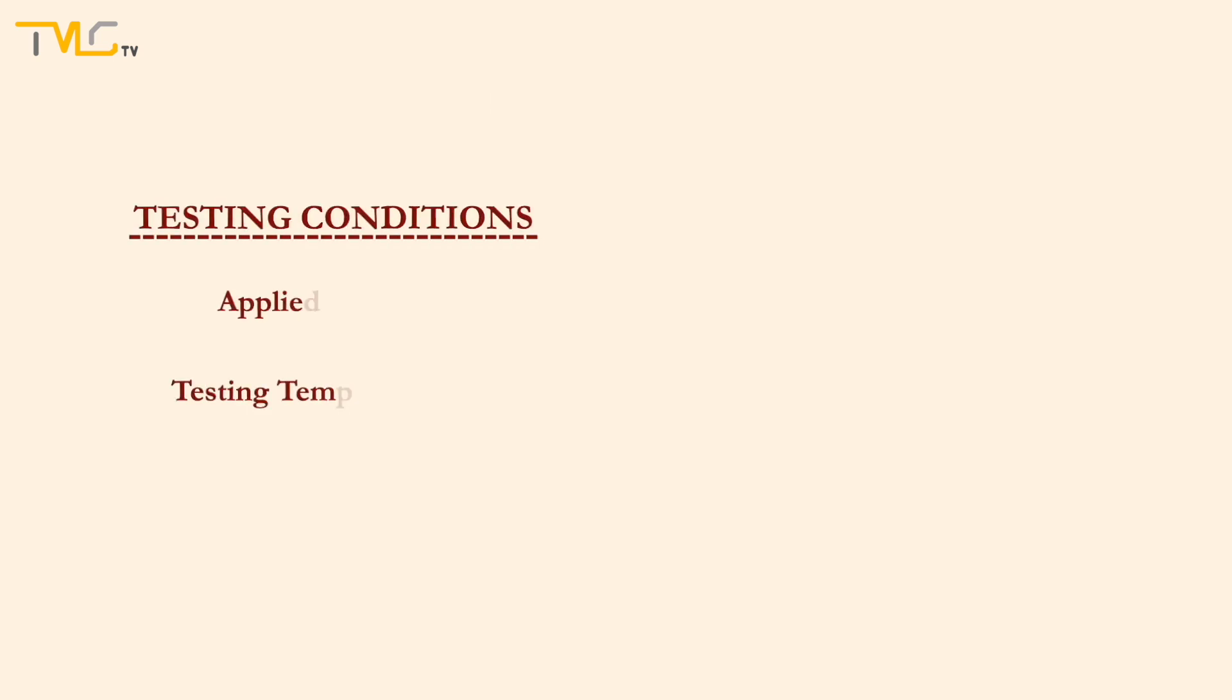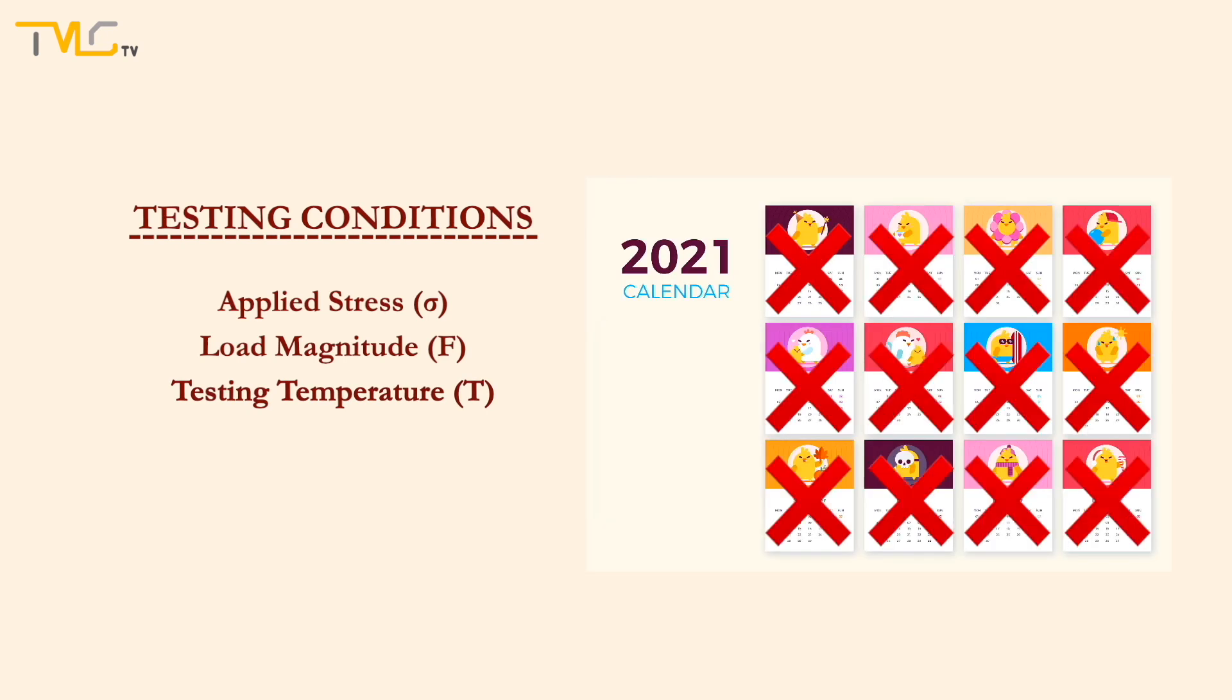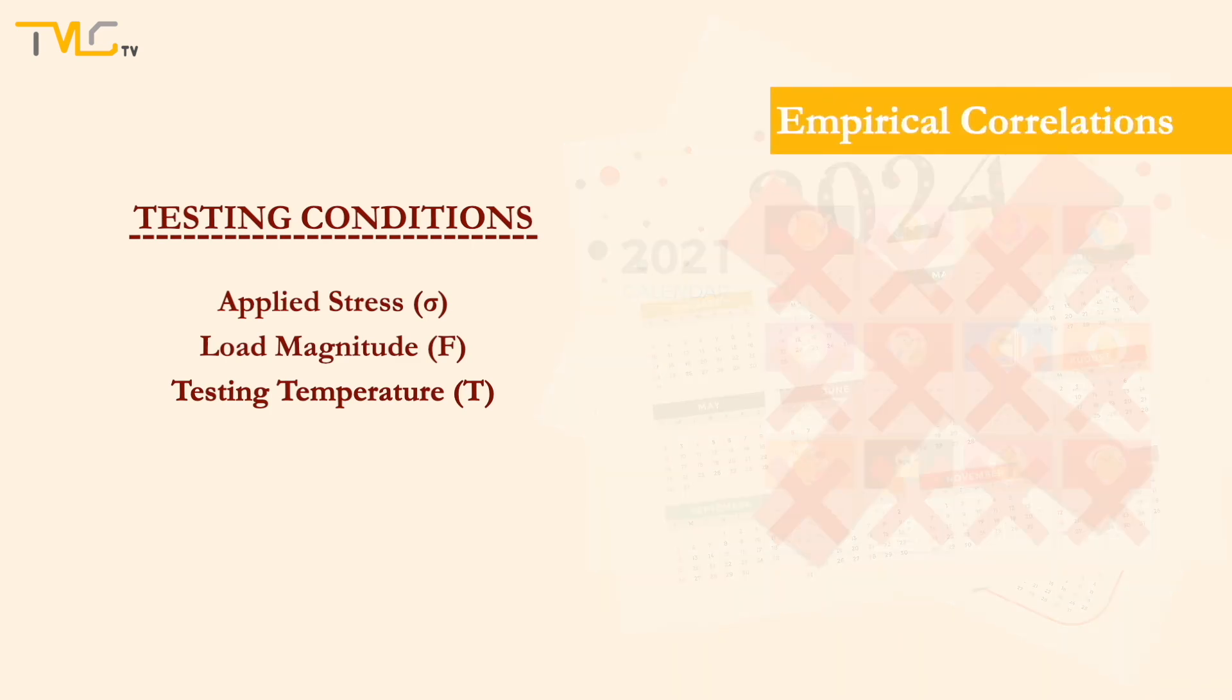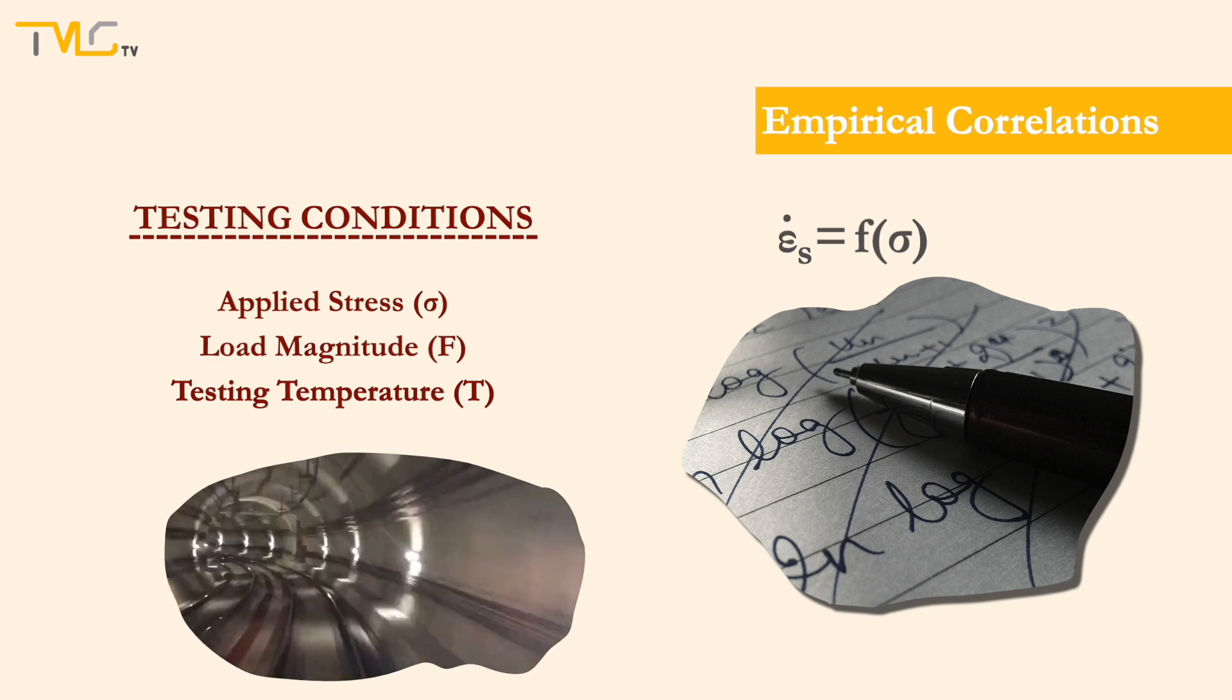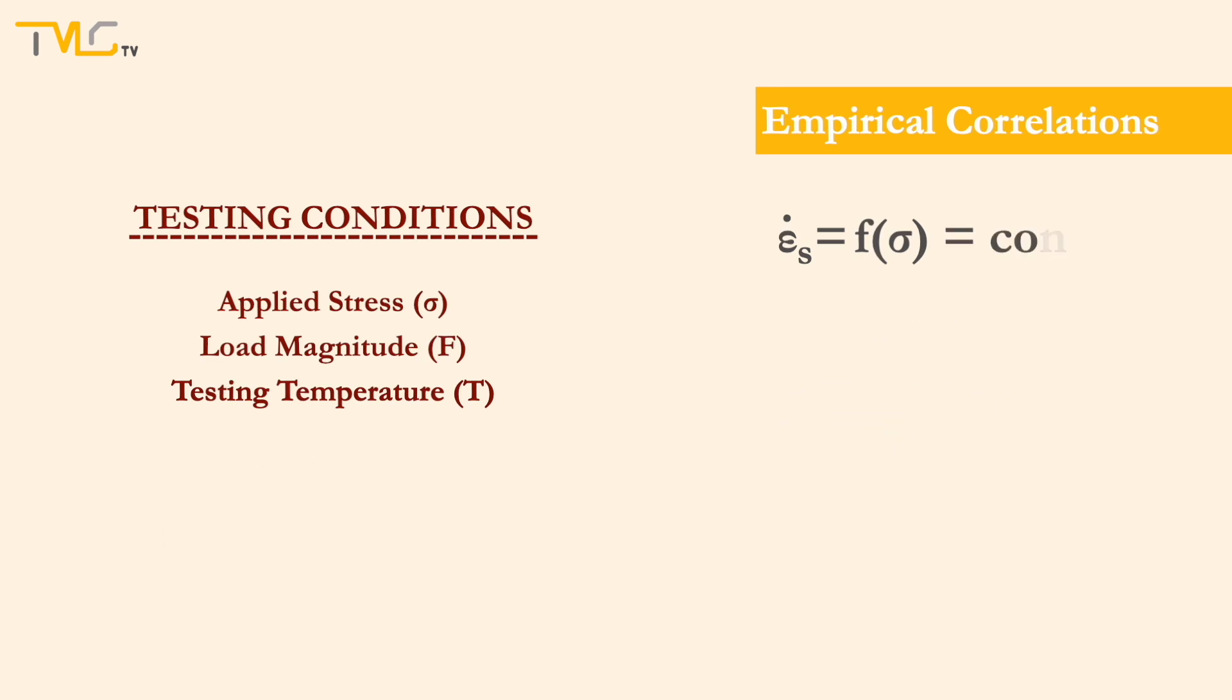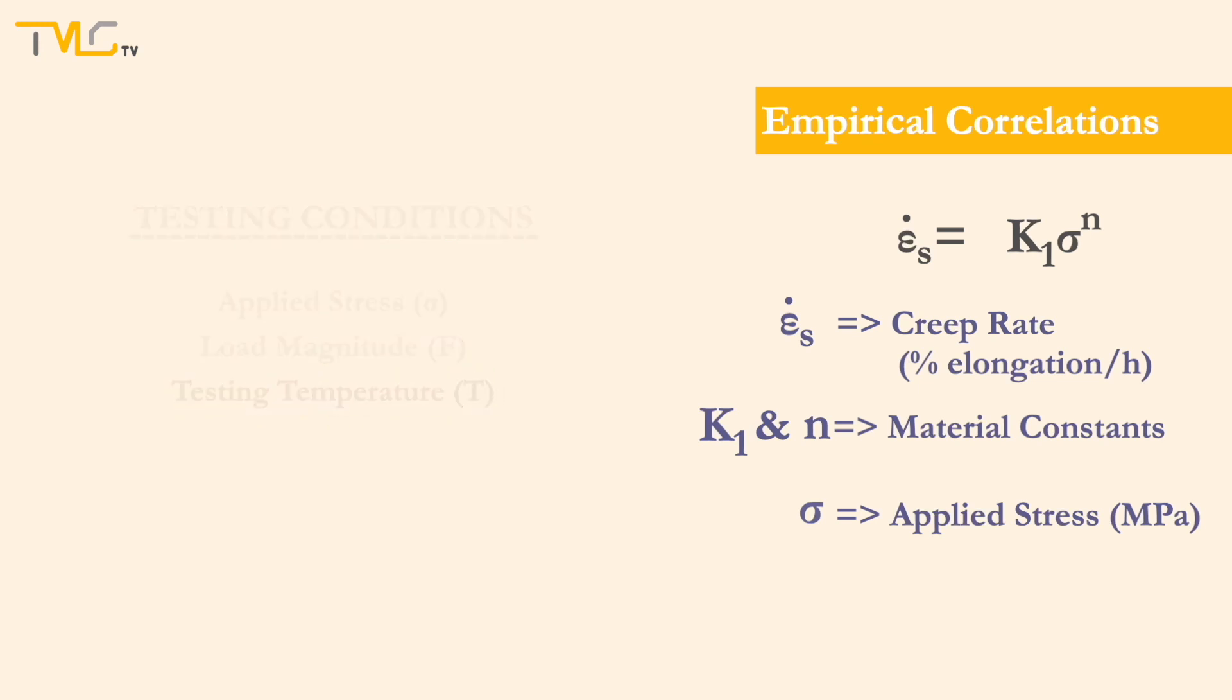As articulated before, depending on the testing conditions, creep tests may run up to months or even years. To not spend that much time collecting data for creep behavior analysis, an empirical correlation between the creep strain rate and the applied stress is developed, enabling the rapid creep behavior analysis for a variety of operating conditions. The material is assumed to have a steady-state creep rate for this empirical approach. Where epsilon knot S stands for the creep rate in percent elongation per hour, K1 and N are material constants, and sigma is the applied stress in MPa. However, since the diffusion is an exponential function of temperature, an Arrhenius-type equation where the testing temperature included as a parameter is developed.